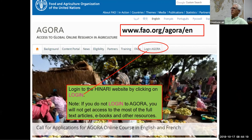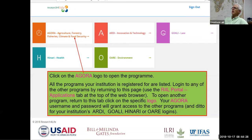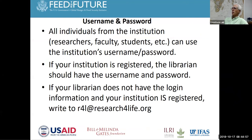Here's where you enter the username and password. You then see five different programs — you could also open an environment or health program for issues relating to livestock. We're going to open Agora, which covers agriculture, forestry, fisheries, climate, and food security. Each institution gets a password that researchers, faculty, and students can use. If your institution is registered, the librarian should have the login. If the librarian doesn't have it, write to the listed address.